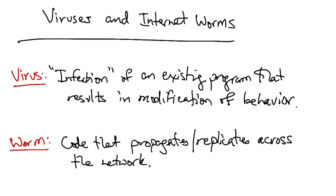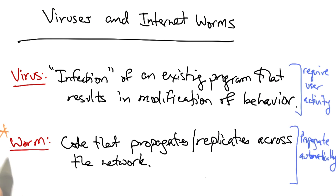Whereas viruses typically require user action to spread — for example, opening an attachment on an email or running an executable file that a friend gave you on a USB key — worms propagate automatically.